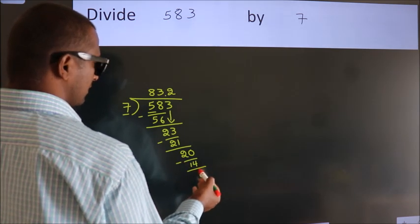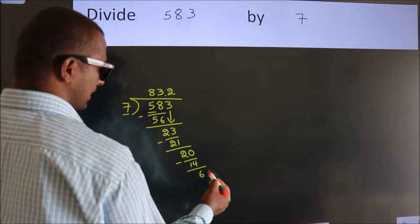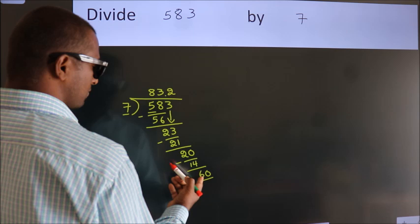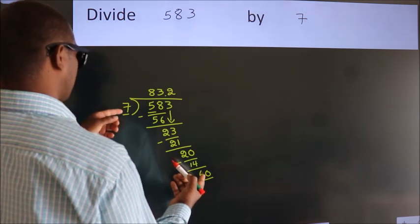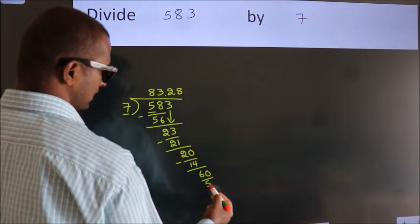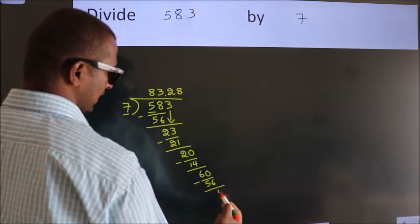After this, we already have the decimal, so directly take 0, giving us 60. A number close to 60 in the 7 table is 7 times 8, 56. Now we subtract. We get 4.